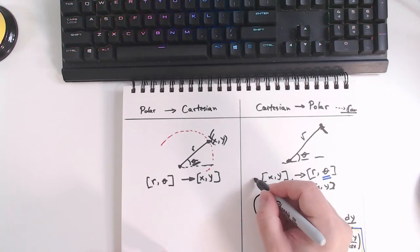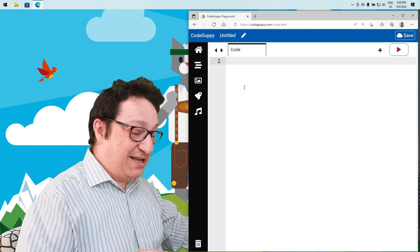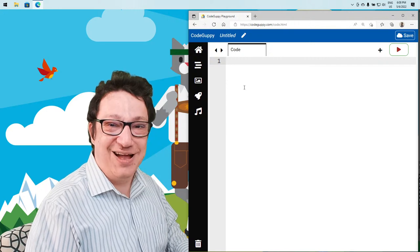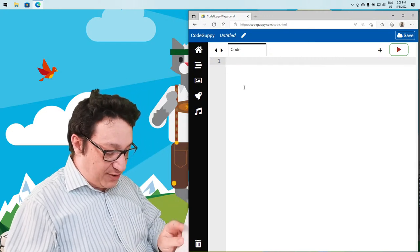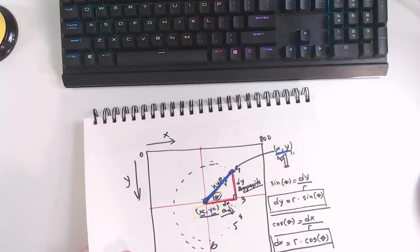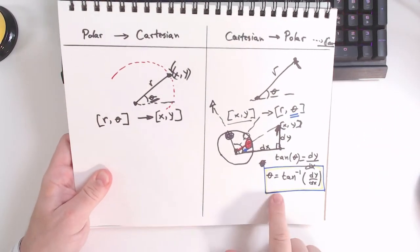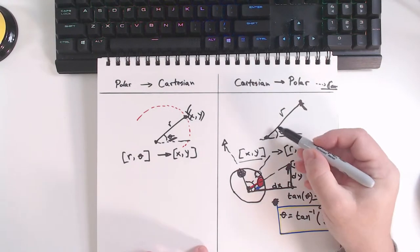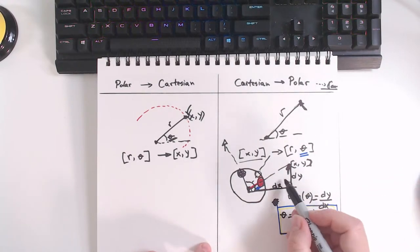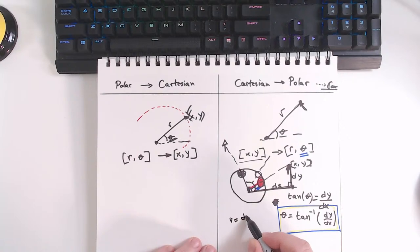As a quick recap: yesterday we used the formulas to convert from polar to Cartesian, and today we're going to use the formula to calculate from Cartesian to polar. We're not interested in finding the distance R today, though you can calculate it using Pythagoras or the dist function in p5.js. Let's keep our notes handy and implement this formula in the code.